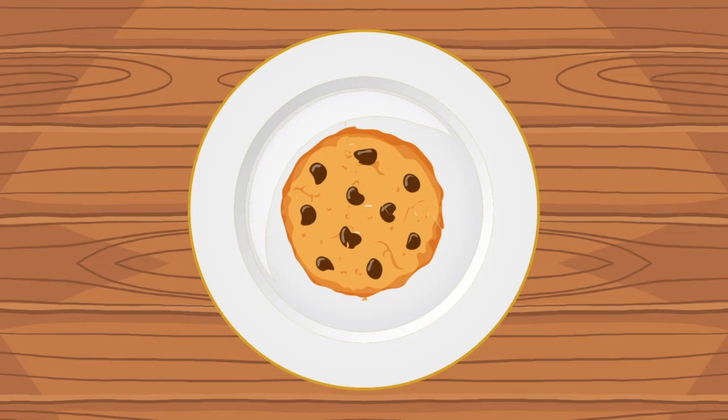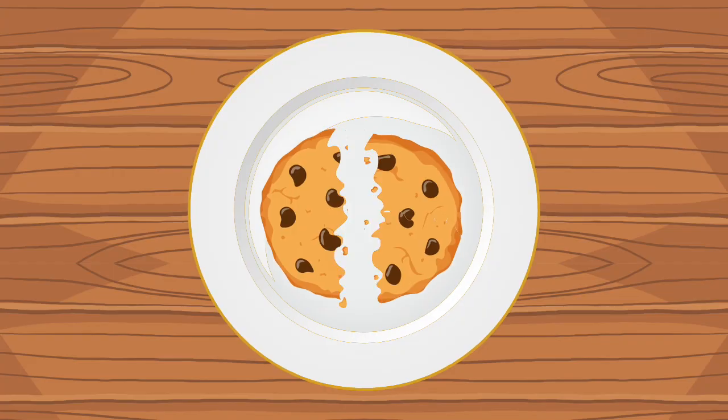Imagine a big chocolate chip cookie. If you break it into two equal pieces and eat one, you've eaten one half of the cookie. We write that as one half.